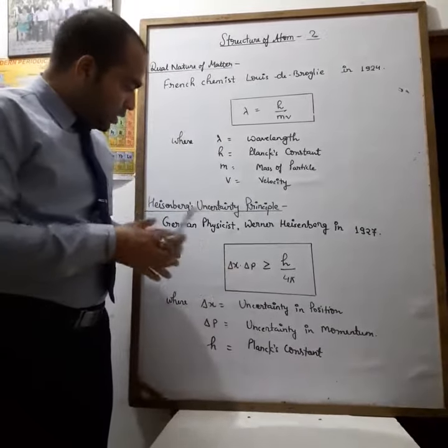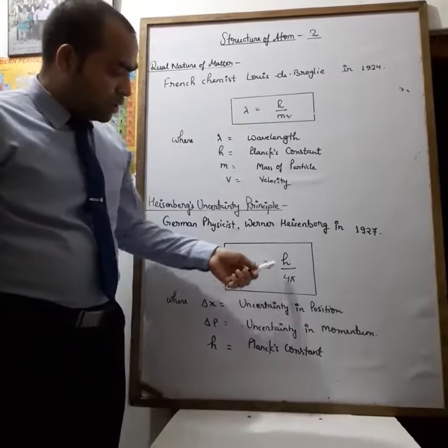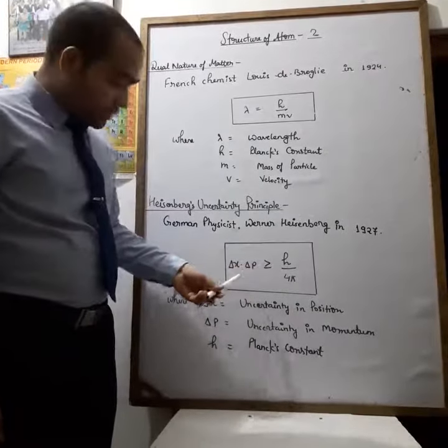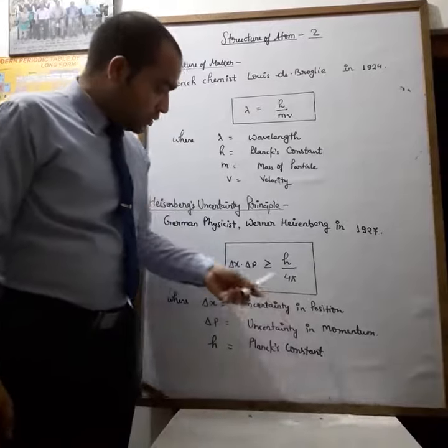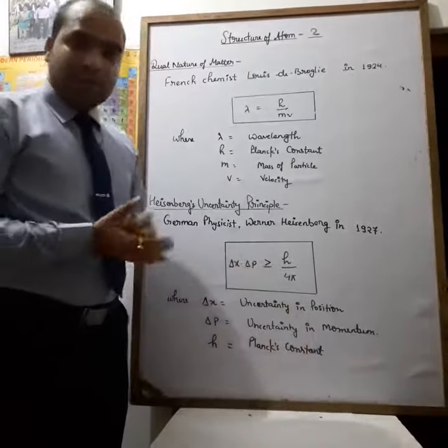That's why he gave the equation: Δx·Δp ≥ h/4π, where Δx is the uncertainty in position measurement, Δp is the uncertainty in momentum measurement, and h is Planck's constant.